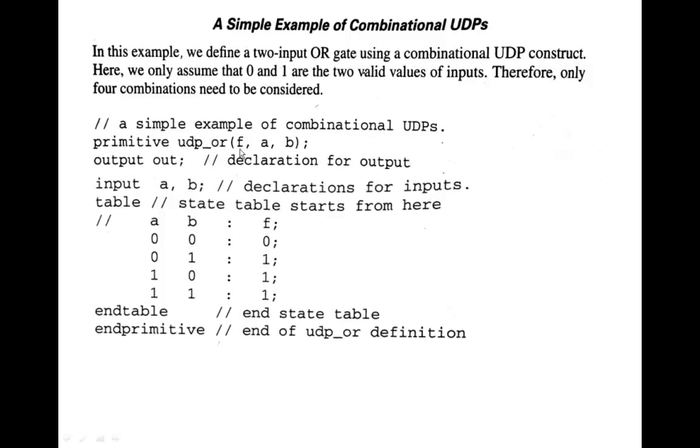Here, F is an output. This is must. Output identifier will be first in a port list. And then, inputs A comma B, terminating with a semicolon. So this is how we declare this module.